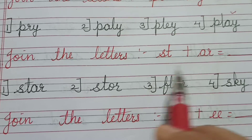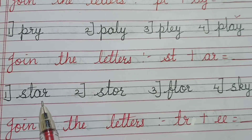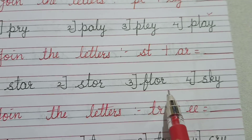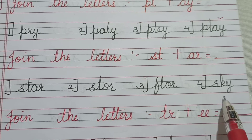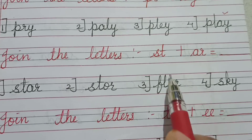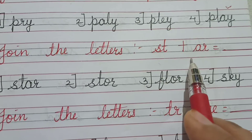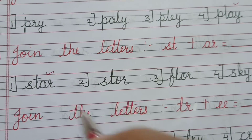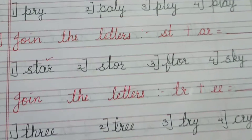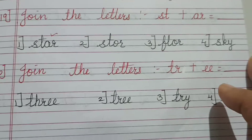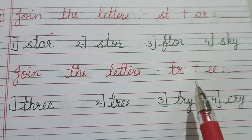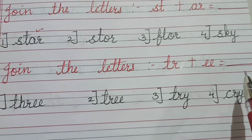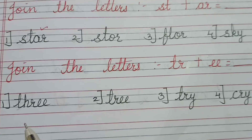The next one is join the letters ST plus AR. ST plus AR — you can see here STAR, STOR, FLOR, SKY. What is the correct answer? STAR — star. So we will tick for star.